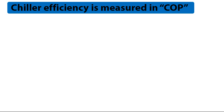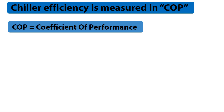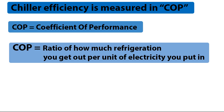Chiller efficiency is measured in COP. The COP stands for coefficient of performance, and really the COP is the ratio of how much refrigeration you get per unit of electricity that you put in — into the compressor and the controls and anything that goes with it. Really all the electricity that goes into that chiller and how much refrigeration you get out of that chiller.